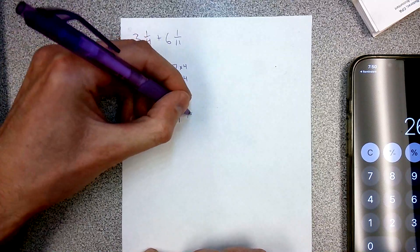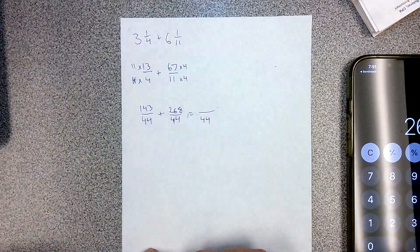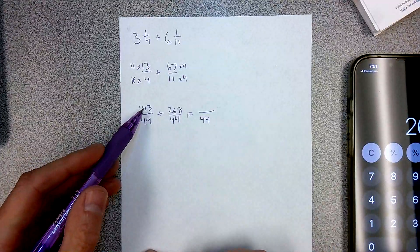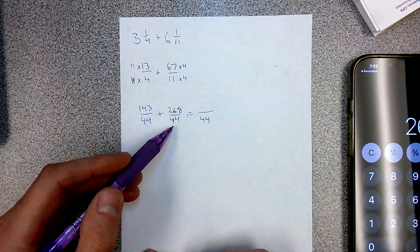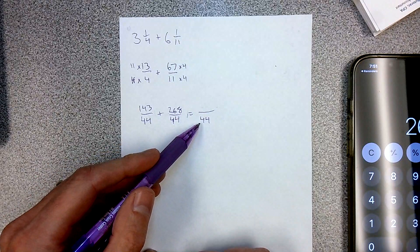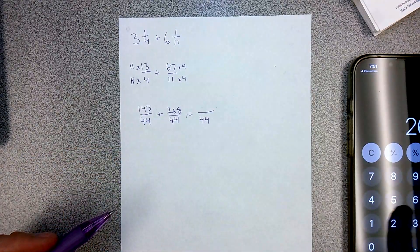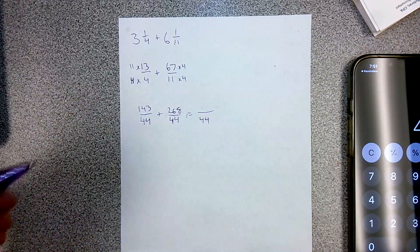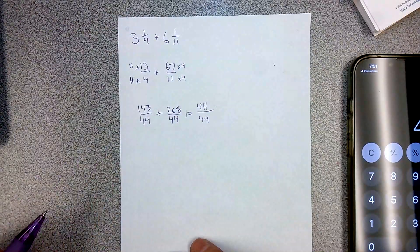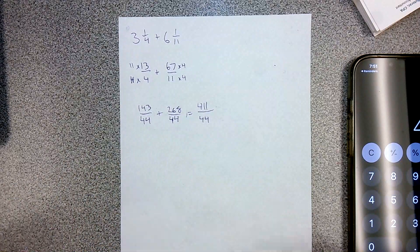I'm adding these together. When you're adding or subtracting, the denominator doesn't change. 143 cookies plus 268 cookies equals some number of cookies. The label itself doesn't change when you add things together. So when I add the numerators, I get 411 40 fourths.